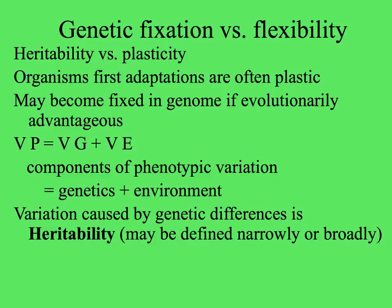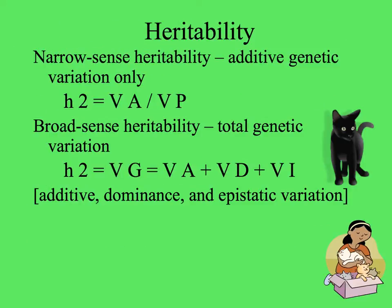Heritability can be defined narrowly or broadly. In a narrow sense, heritability is just additive genetic variation — H² refers to the additive variance over the total phenotypic variation. Broad sense heritability is the total genetic variation, which includes dominance and also epistatic variation.